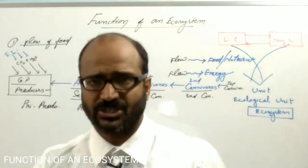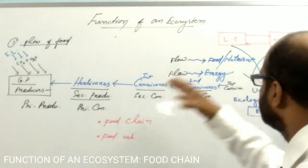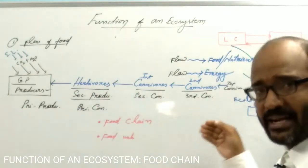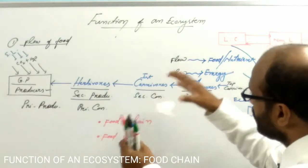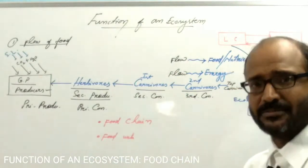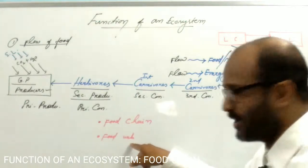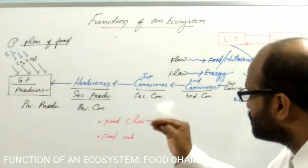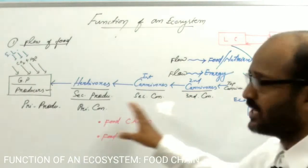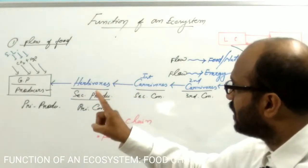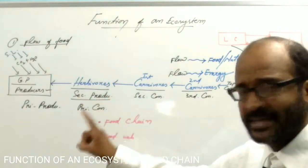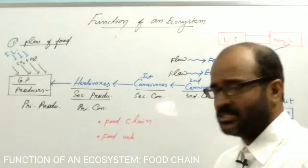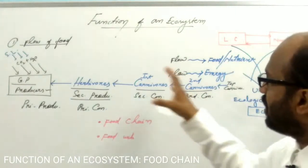In the ecosystem, such sequence of feeding and becoming food of others does not operate in a single sequence manner. Actually, all the different food chains are interconnected to each other, which forms the food web. In this video, I will discuss about only the food chain. In the ecosystem, only the green plants are the producers; they have the capacity to produce food for the other members.